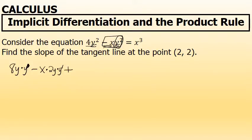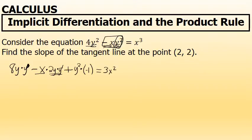Plus — what I have right now is the first factor times the derivative of the second — I'm going to write the second factor, y squared, times the derivative of the first factor. The derivative of the first factor, negative x, is negative 1. On the other side of the equation, I have x³, whose derivative is simply 3x².